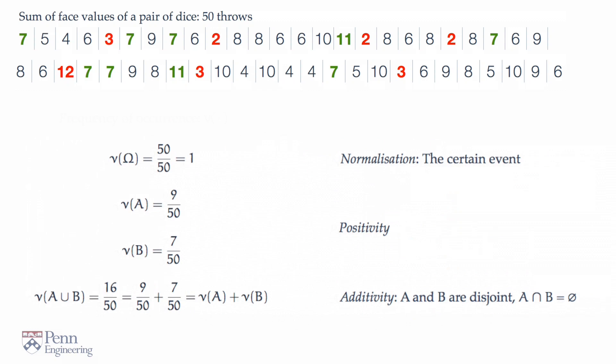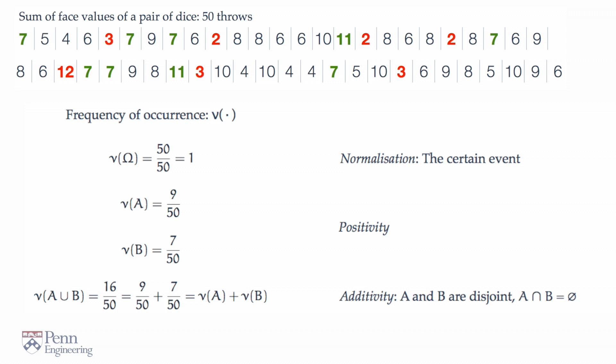The sample space is certain. Second, every such ratio is a non-negative number. One cannot have a negative frequency of occurrence. We have positivity.